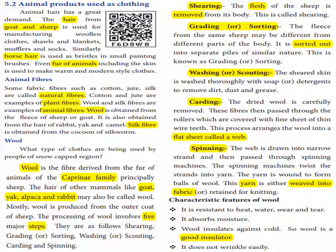Then carding. The dried wool is carefully separated. These fibers are then passed through rollers which are covered with fine sheets of thin wire teeth. This process arranges the wool into a flat sheet called a web.